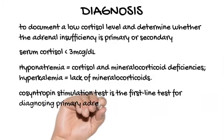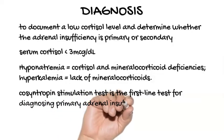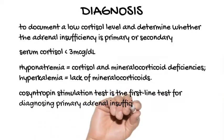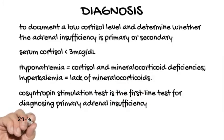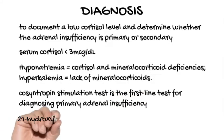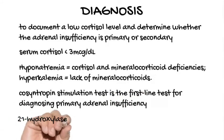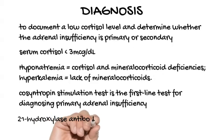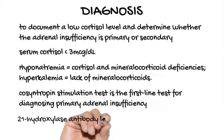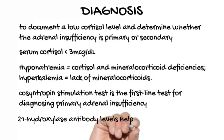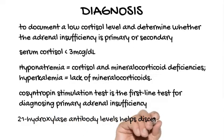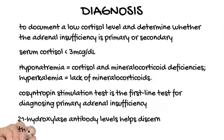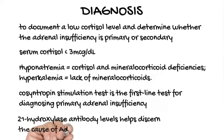Immunologic Tests: Measurement of 21-hydroxylase antibody levels helps discern the cause of Addison disease. The 21-hydroxylase enzyme is necessary for cortisol synthesis in the adrenal cortex. Antibodies directed against the enzyme are specific for autoimmune adrenalitis and are detectable before symptom onset.